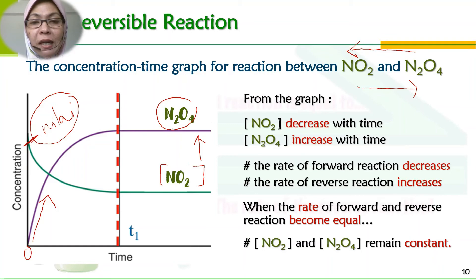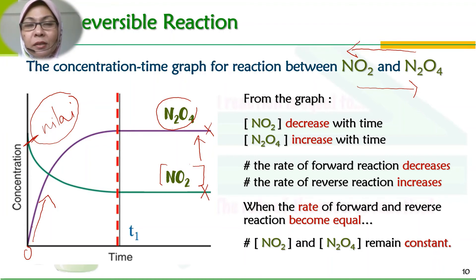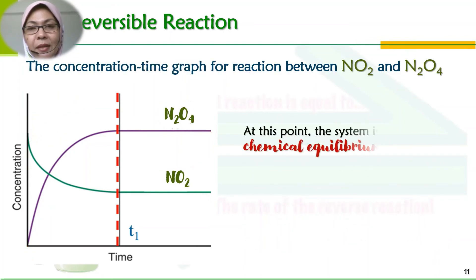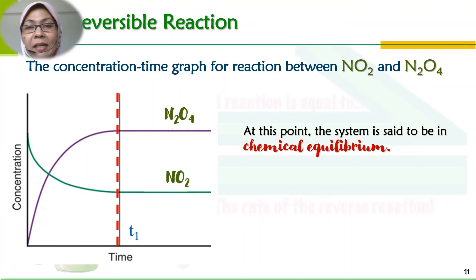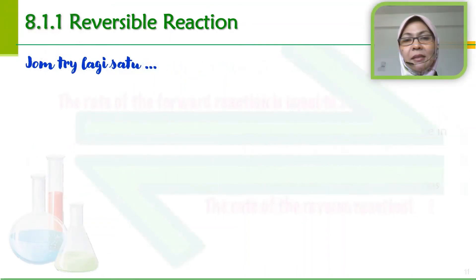Kalau N2O4 nilainya di sini, maka di sinilah dia tetap. Kalau NO2 nilai di sini, maka di sinilah — dia tetap tidak akan berubah lagi. Itu yang dimaksudkan apabila kadar tindak balas ke hadapan sama dengan kadar tindak balas ke belakang, maka concentration reactant ataupun NO2 akan menjadi constant — tidak berubah lagi, bukan menjadi sama dengan N2O4. At this point, sistem dikatakan telah mencapai keseimbangan kimia dan reaction akan berterusan tanpa henti, maka sistem telah mencapai dynamic equilibrium.